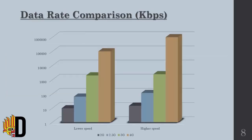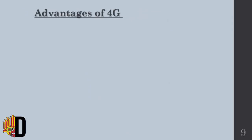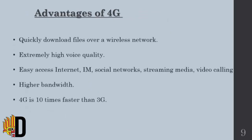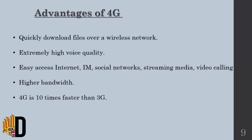This is the data rate comparison of 2G, 2.5G, 3G, and 4G. You can clearly see the difference in data rate speed in kilobytes per second, showing lower and higher speeds for each respective generation. 2G, 2.5G, and 3G technologies have less speed than 4G technology.